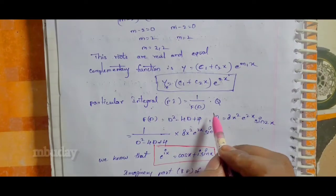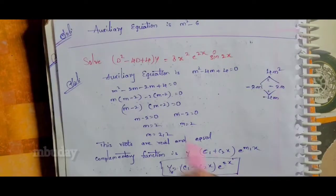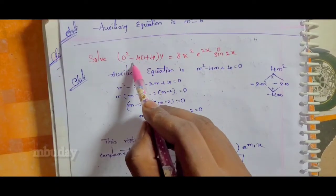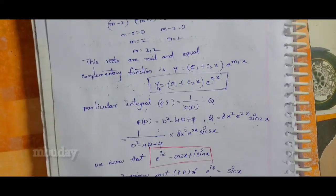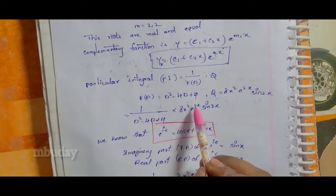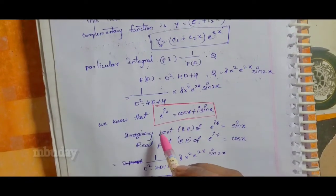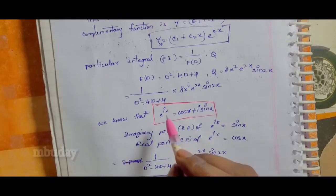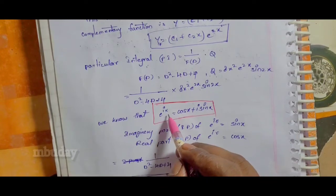Next, the particular integral. The particular integral is given by PI = 1/f(D) · Q, where f(D) is the operator and Q is the right-hand side of the equation.